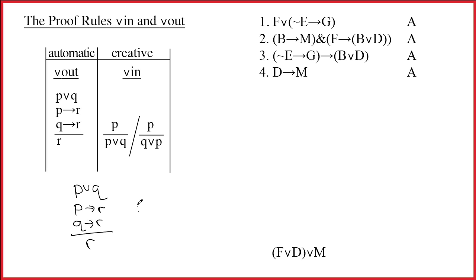Sometimes this rule is called dilemma. That's kind of a traditional name for it. Dilemma has negative connotations, and the rule doesn't have any negative connotations. But you'll notice there are two possibilities, and both possibilities get you to the same place. So two ways of getting to the same place.